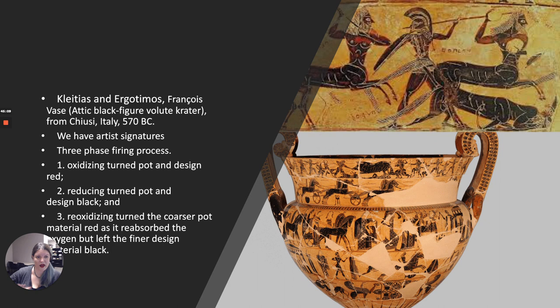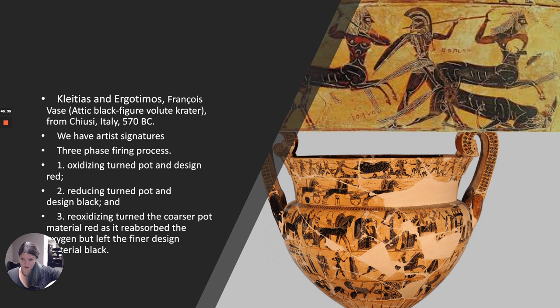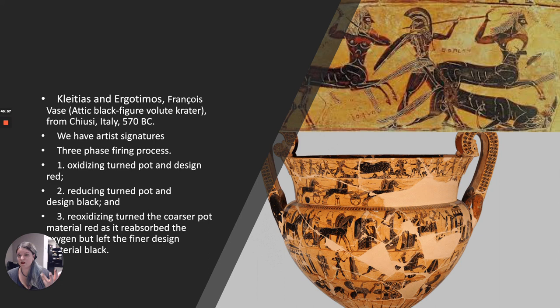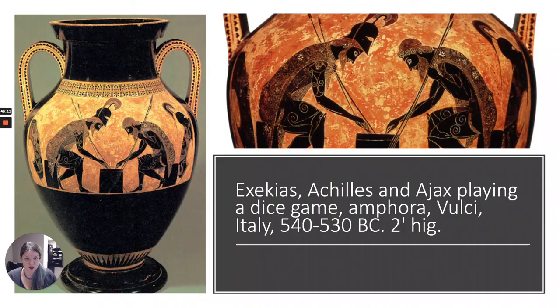On the François vase, we're getting a little bit away from the geometric kind of patterning. We still have simplified figures, but they're becoming more detailed and we're starting to see more realistic things. The way this is achieved is a three-phase firing process. First is oxidizing — firing the pot with oxygen — which turns it red. Then there's the reducing period, firing it and cutting off the air, which turns the pot and design totally black. Then re-oxidizing turns the coarser clay of the pot red again, because it absorbs oxygen back. But the really fine silt used to paint the design is too fine — oxygen can't get back into it — so it remains black. It's a pretty clever process.